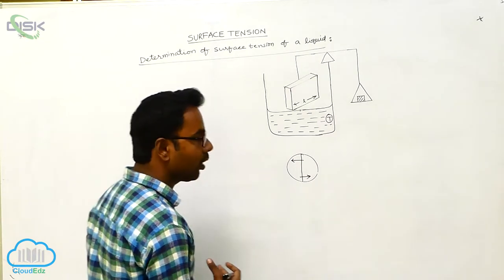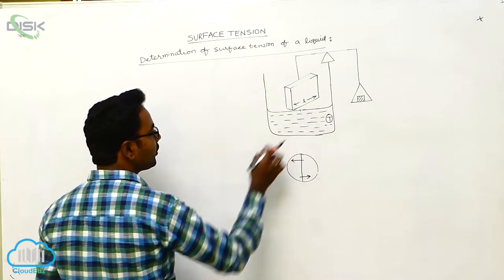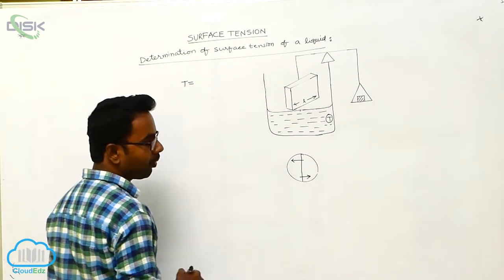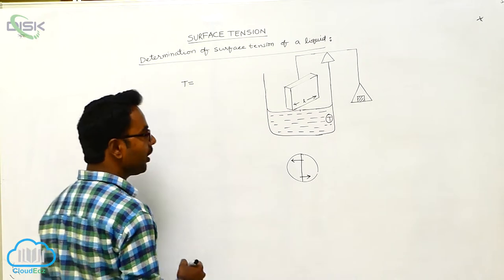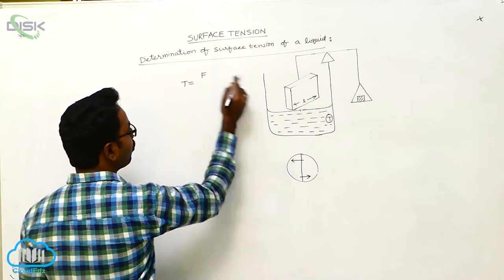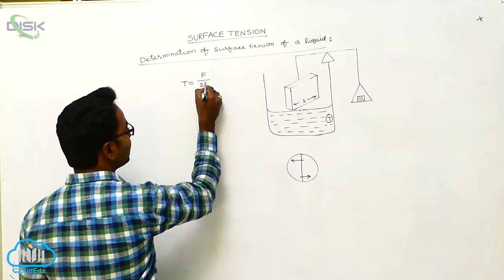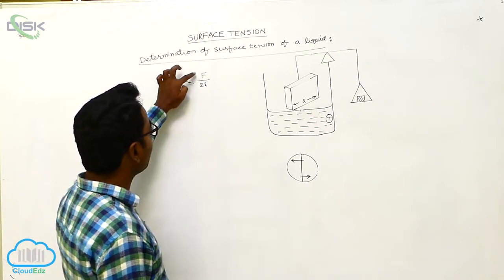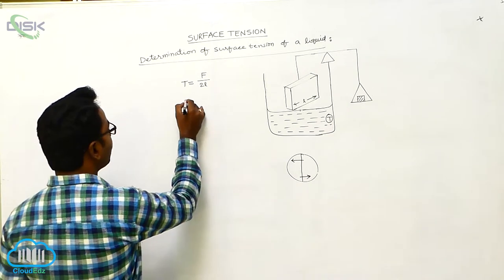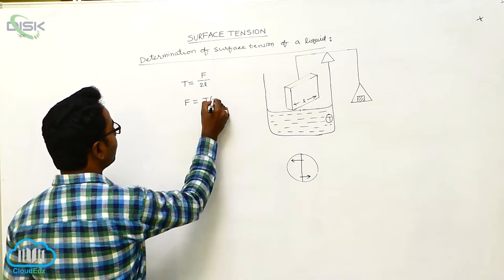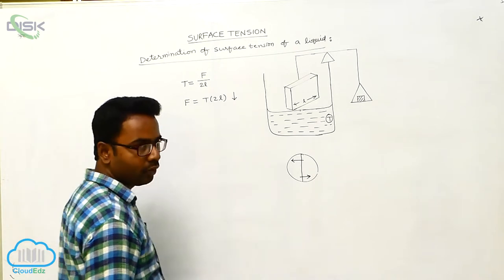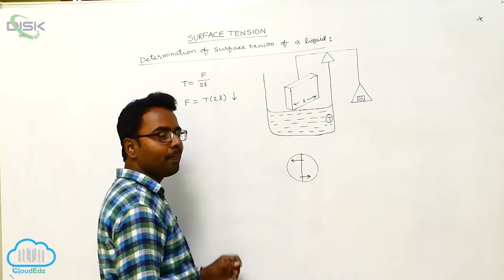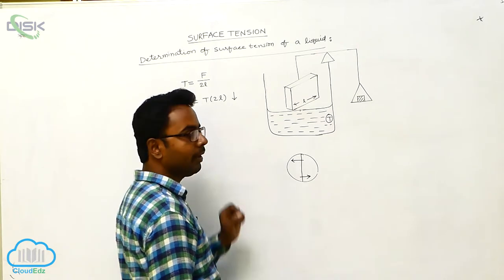Suppose the surface tension of this liquid is T. The formula for surface tension is T = Force / Length. If the downward force acting on this glass plate is F, and this force is acting along the length 2L, then T = F / 2L. Therefore, the downward force F = T × 2L.